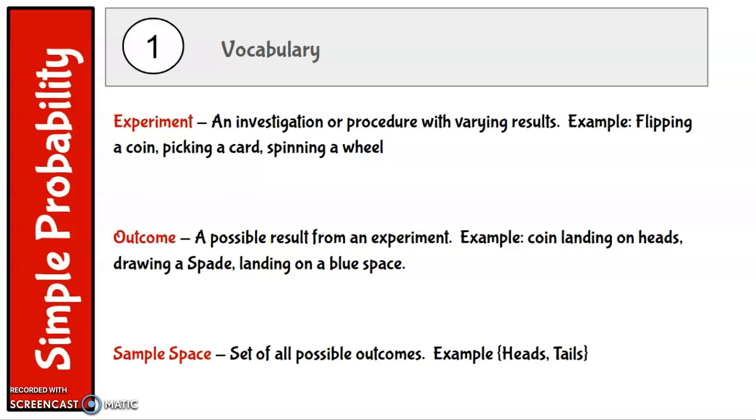Outcome is a possible result from an experiment. For example, if we're flipping a coin, the outcome might be landing on heads. If we're drawing a card, it might be the outcome is drawing a spade. And spinning a wheel, the outcome might be landing on a blue space.